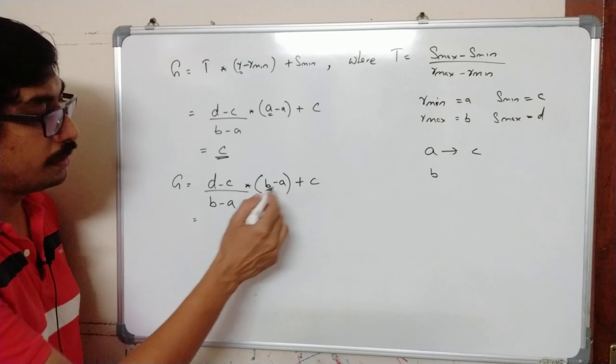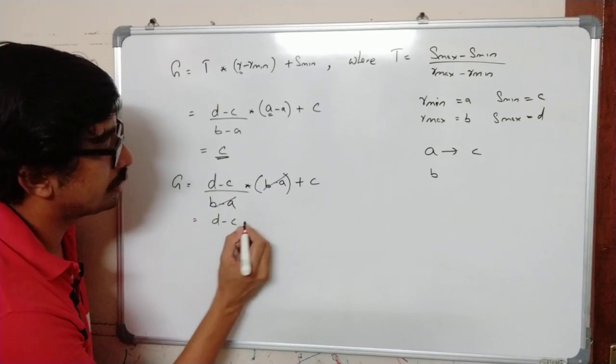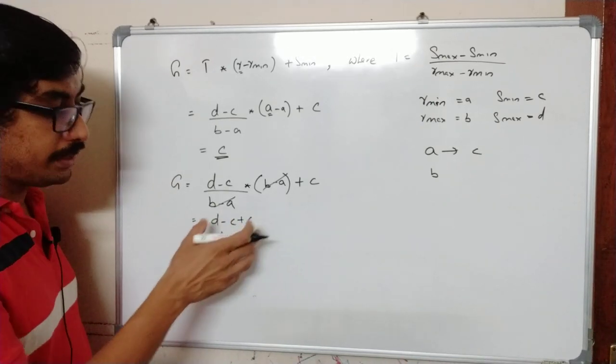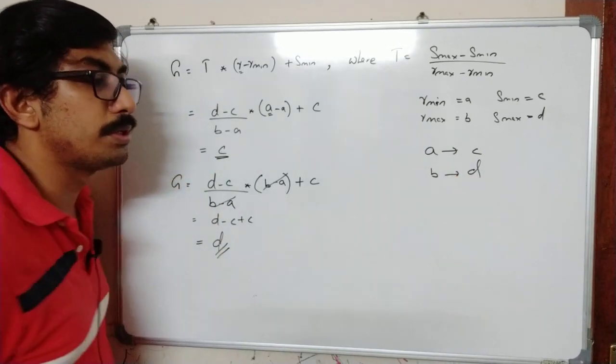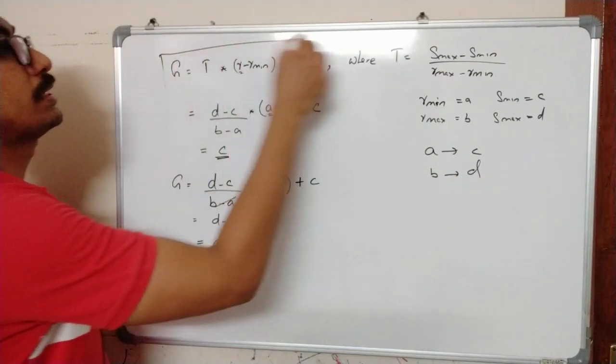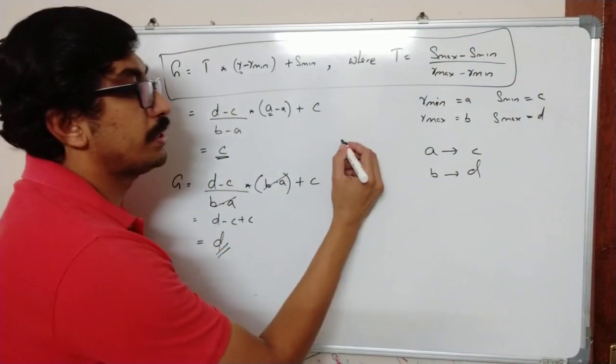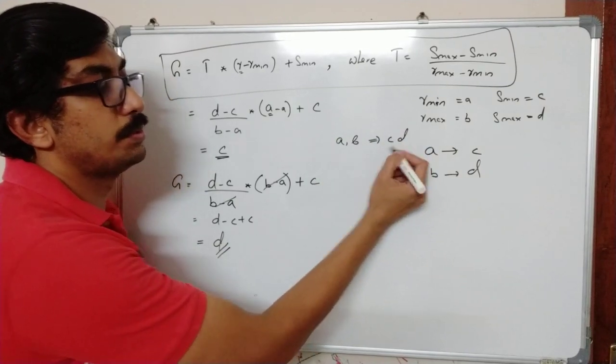So here we will get these two values will get cancelled, that is (D minus C) plus C, which means you will be getting the value as D. So everything or every intensity which was earlier B will be changed to D. So this is the equation by which you can transform a range of intensity value A to B and move it to C to D.